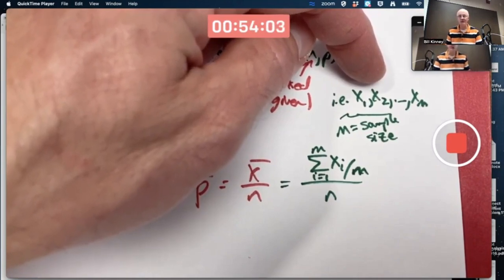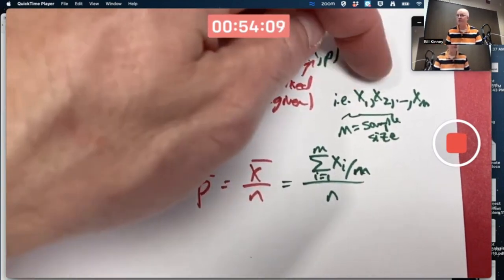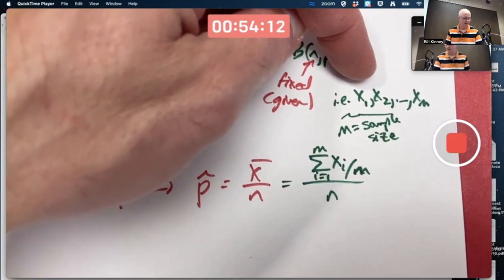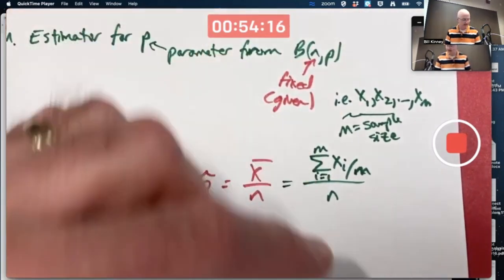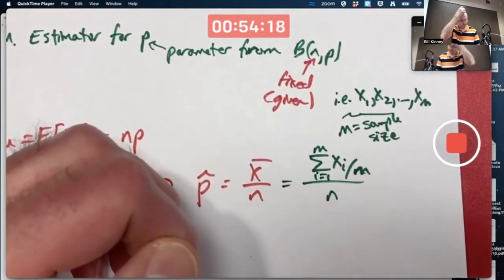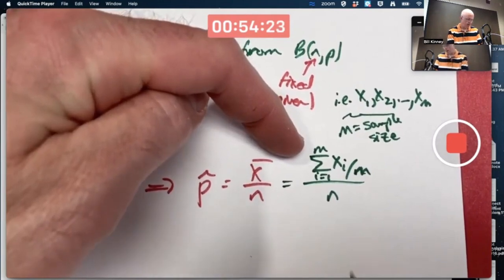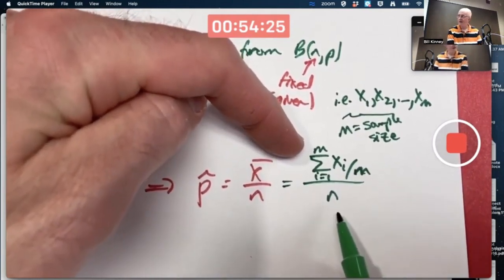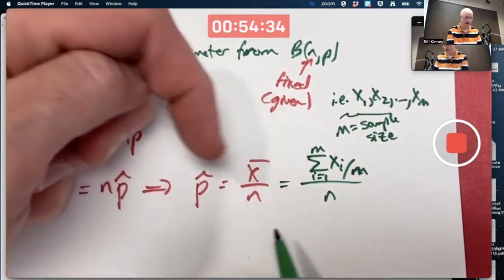But maybe I do this experiment 100 times. M would be 100. And I get 100 observed values that are all between 0 and 20, mostly close to 8. Their average would be close to 8. If I divide that by 20, I'll get a number close to 0.4. Right? 8 divided by 20 would be 0.4. I get an observed value of p̂.